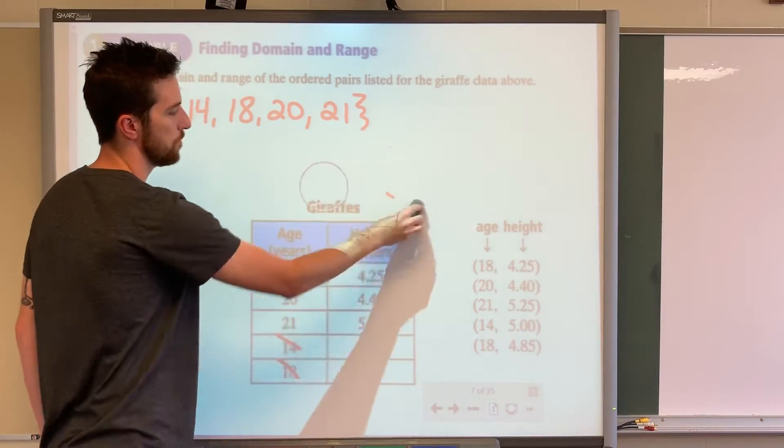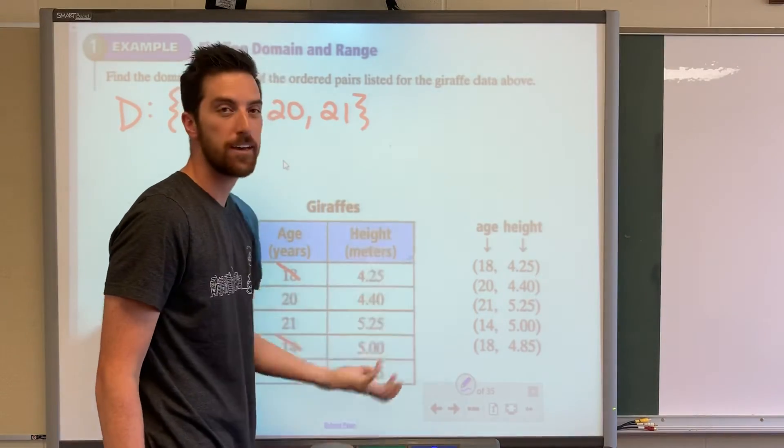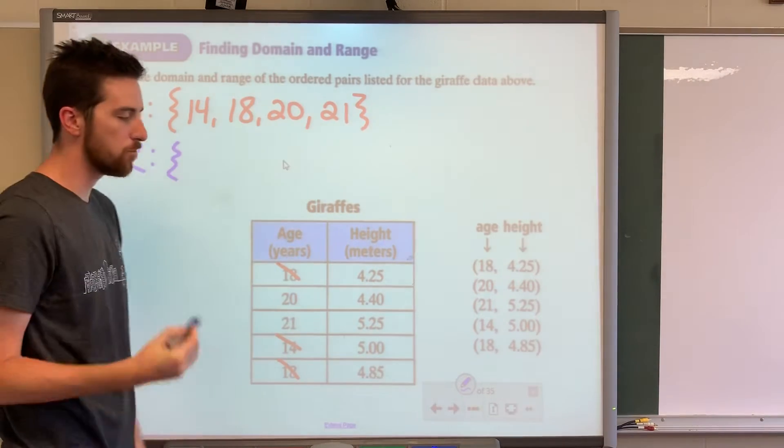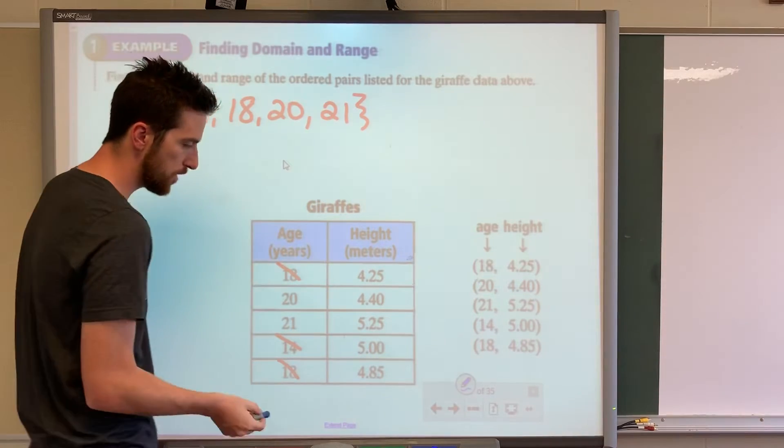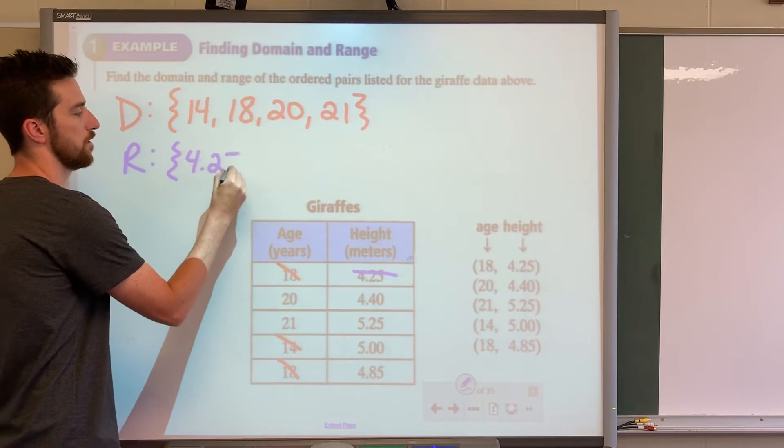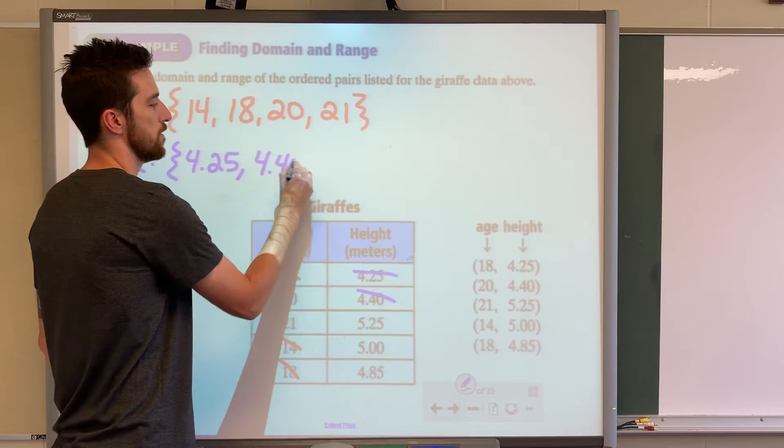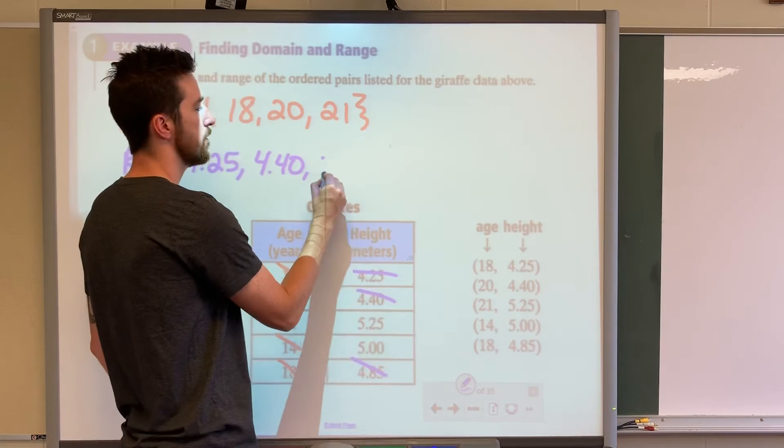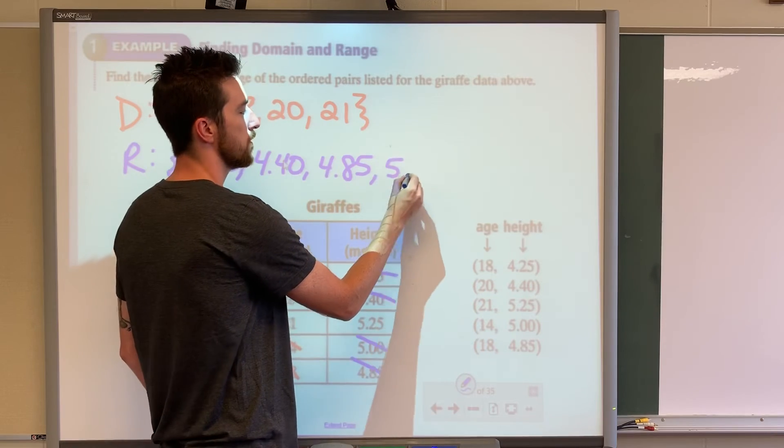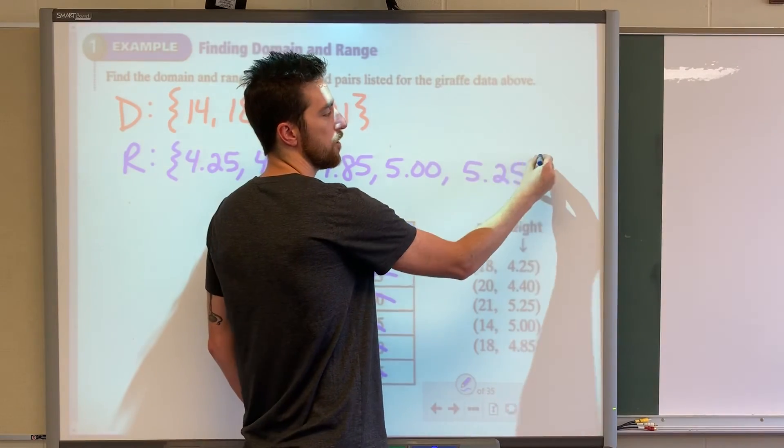I'm going to erase this for a little more room. Now we're going to list our range values. Range, remember, our output or the second column or the y coordinate. Same thing, least to greatest. If it's in there more than once, you only write it once. So the smallest one I see here, let's see, 4.25. Then we've got 4.4 or 4.40. Then we've got our 4.85, 5.00 and 5.25. Make sure you close it out as well.